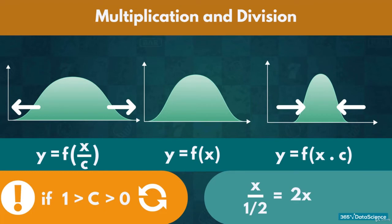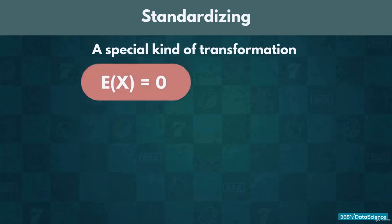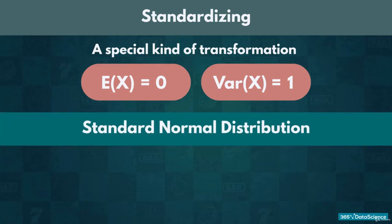Alright, now that you know what a transformation is, we can explain standardizing. Standardizing is a special kind of transformation, in which we make the expected value equal to 0 and the variance equal to 1. The distribution we get after standardizing any normal distribution is called a standard normal distribution.